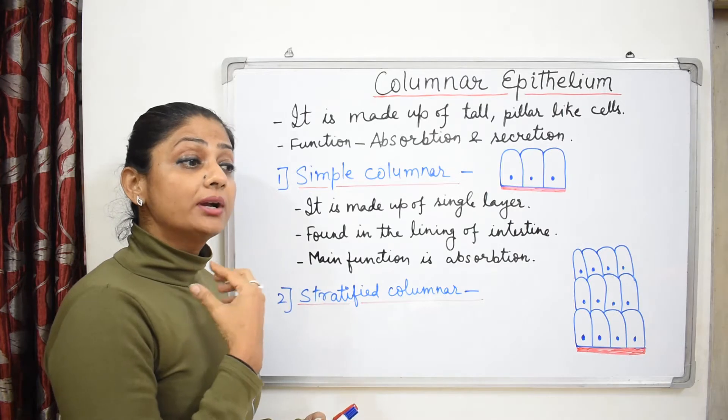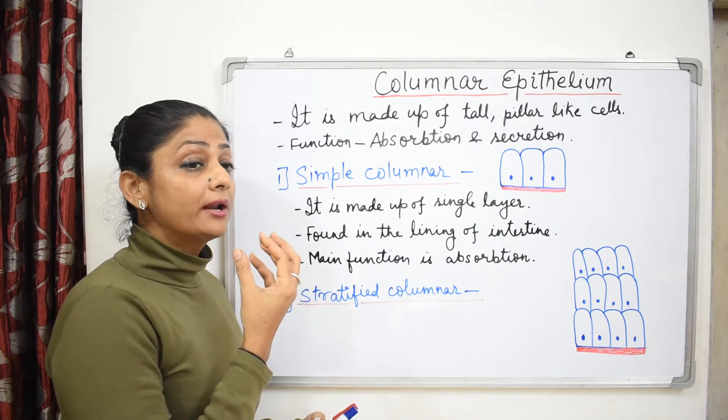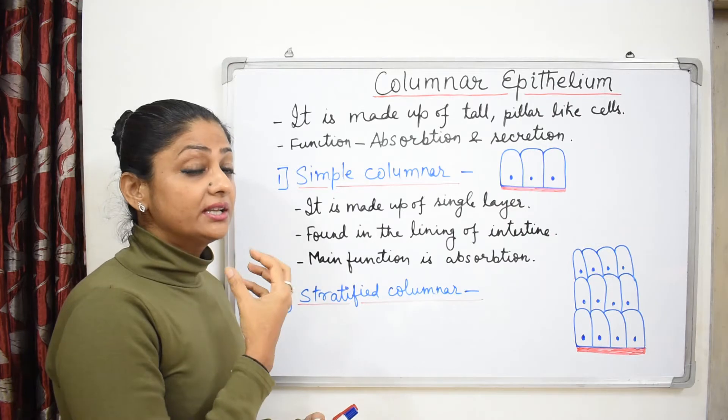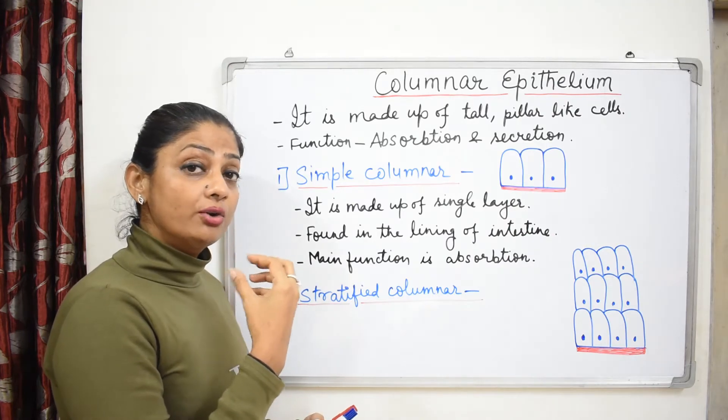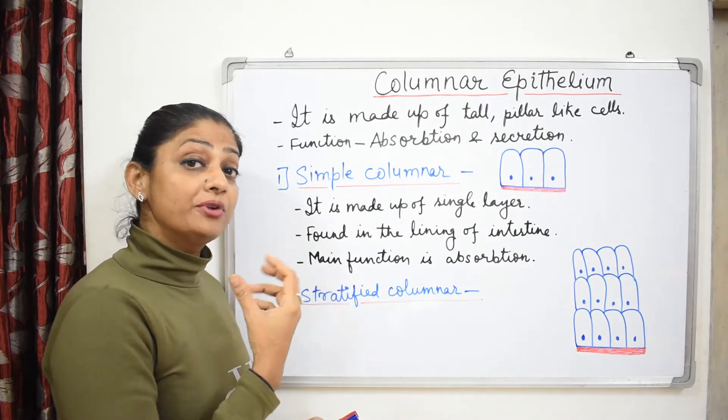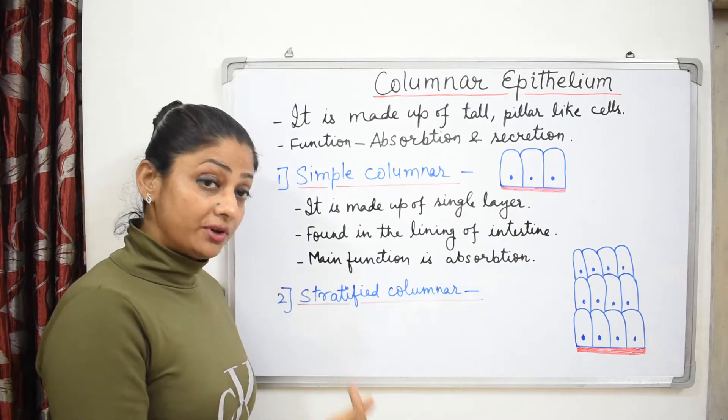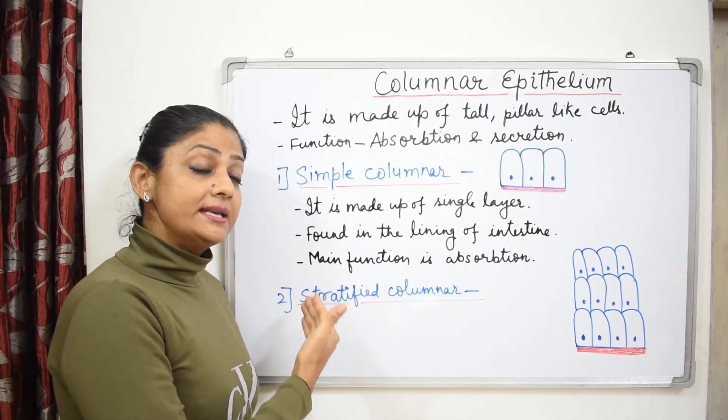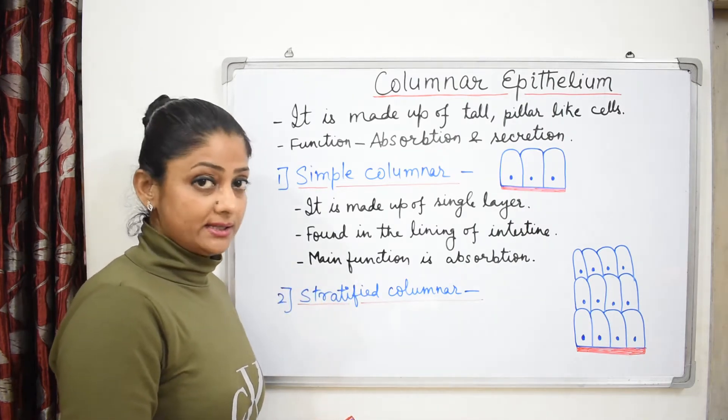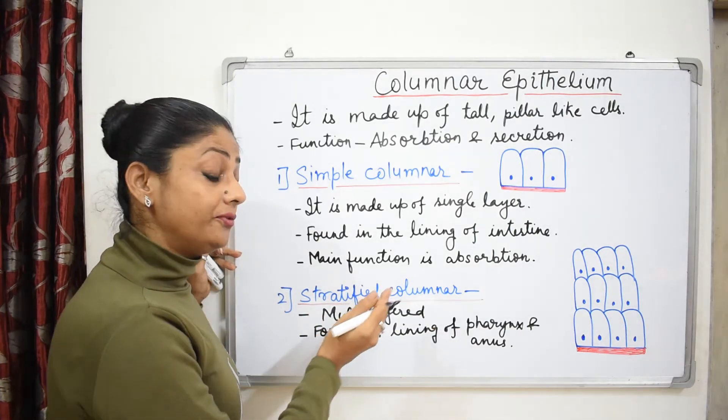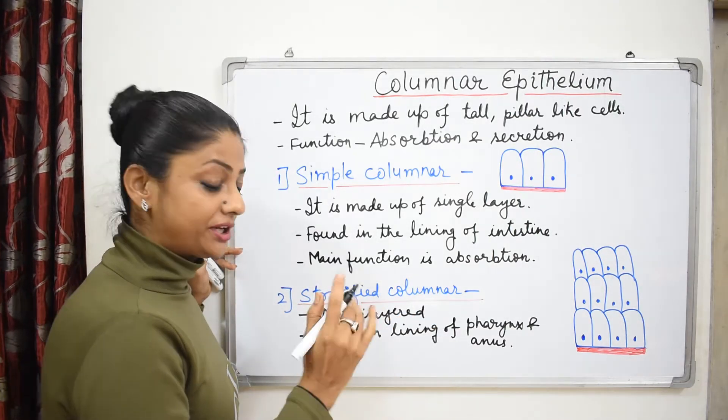Pharynx is the place where we go from the throat to the esophagus. There is more friction there, and where there is more friction, it will be made up of stratified columnar. The main function of stratified columnar is protection.